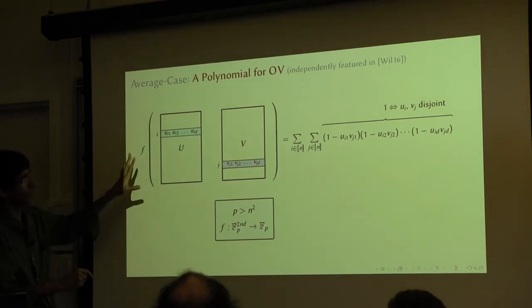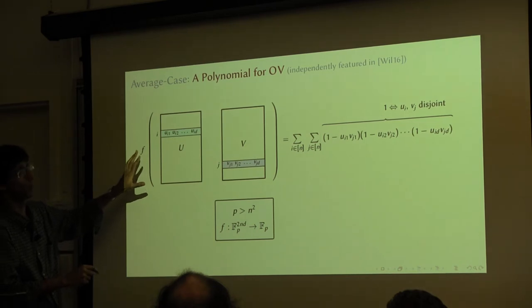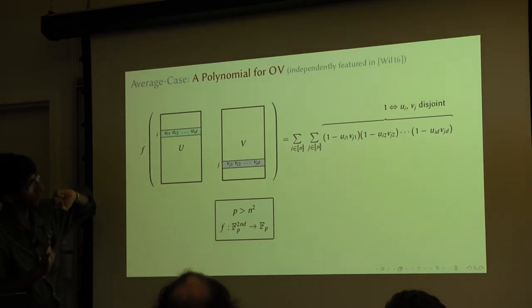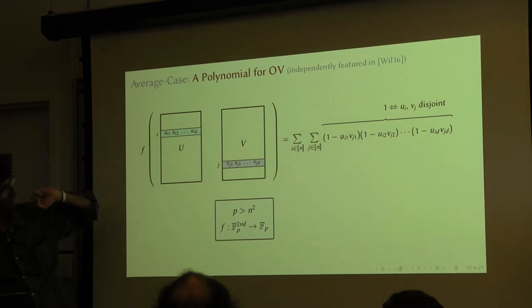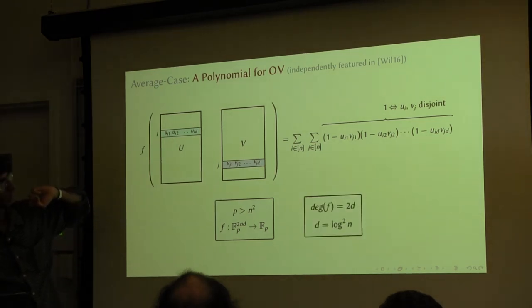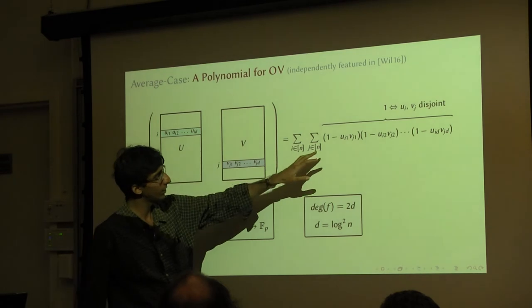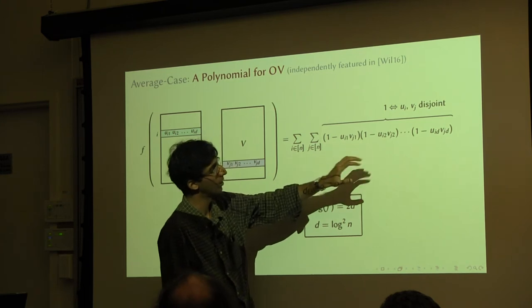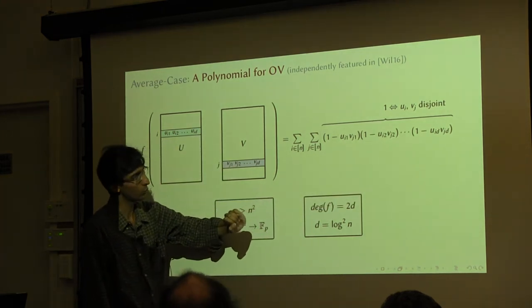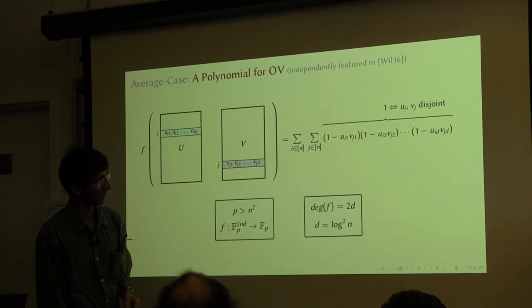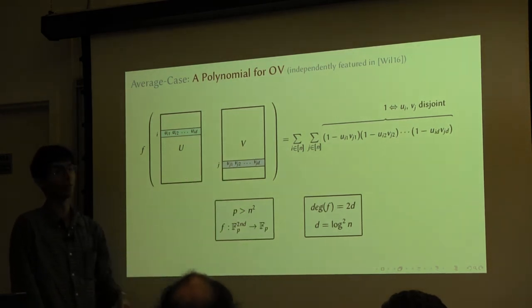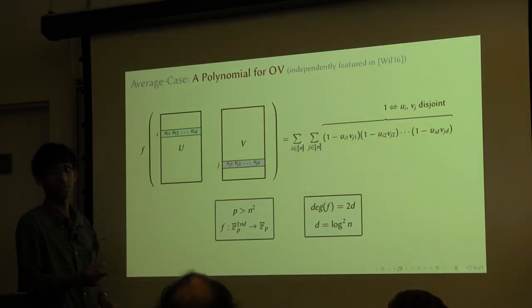Before going on to show how to do that, I want to point out two properties of this polynomial. The first is that its degree is not very high. The degree is at most 2D — you're multiplying D things, each a product of two things, so the degree is 2D. And D is pretty small: we took D to be log-squared n, so the degree of this polynomial is pretty small.